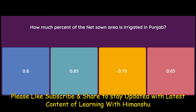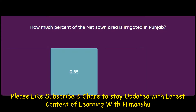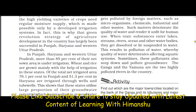How much percent of the net sown area is irrigated in Punjab — 80, 85, 75, or 65 percent? The answer is 85 percent. In Punjab, Haryana and western Uttar Pradesh more than 85 percent of their net sown area is under irrigation. Wheat and rice are grown mainly with the help of irrigation in these states. Of the total net irrigated area, 76.1 percent in Punjab and 51.3 percent in Haryana are irrigated through wells and tube wells.